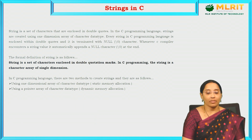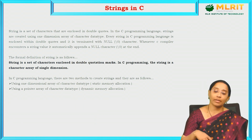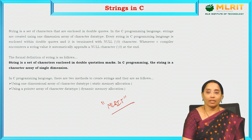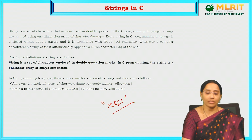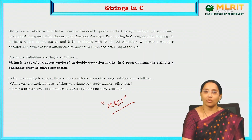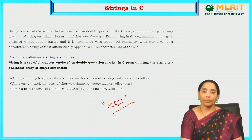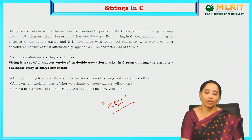What is a string? A string is a set of characters that are enclosed in double quotes. Anything enclosed in double quotes is considered as a string. Strings are created using a one-dimensional array of character data type, so we can call it an array of characters. Every string in C programming is enclosed in double quotes and terminated with a null character. Whenever a C compiler encounters a string value, it automatically appends a null character at the end.